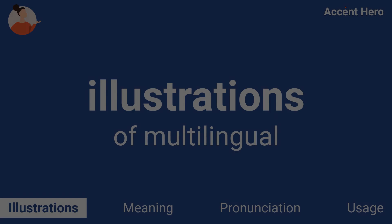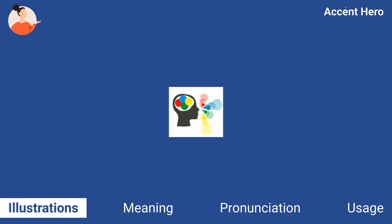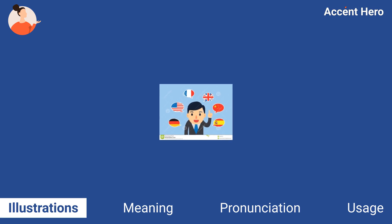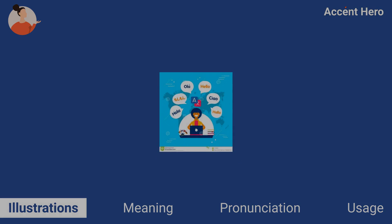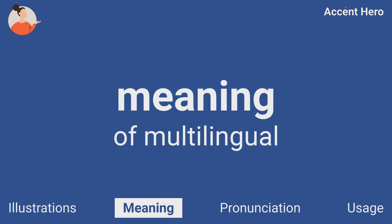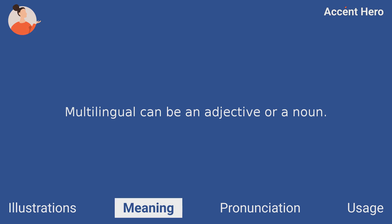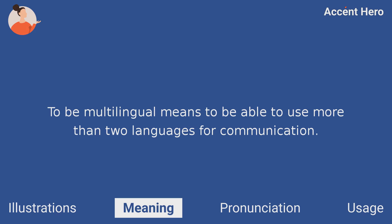Illustrations. Meaning. Multilingual can be an adjective or a noun. To be multilingual means to be able to use more than two languages for communication.